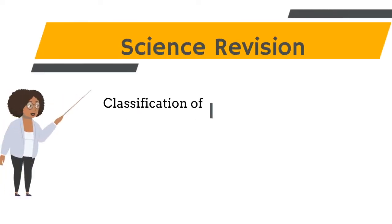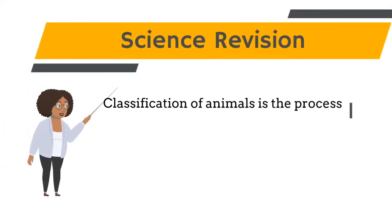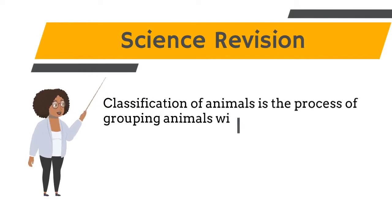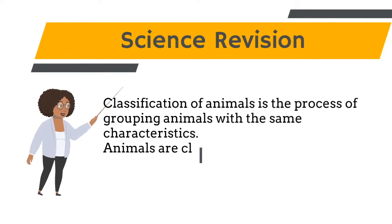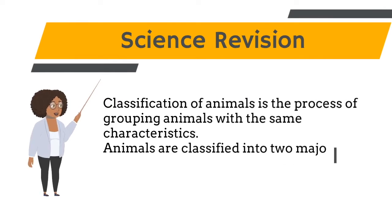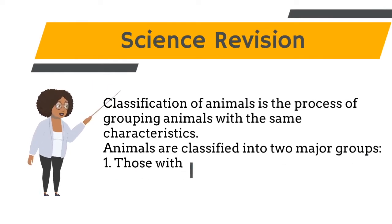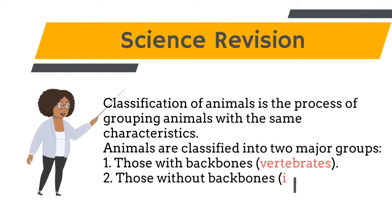Classification of animals is the process of grouping together animals that have the same characteristics. Animals are classified into two major groups: 1. Animals with a backbone — they are called vertebrates. 2. Animals without a backbone — they are called invertebrates.